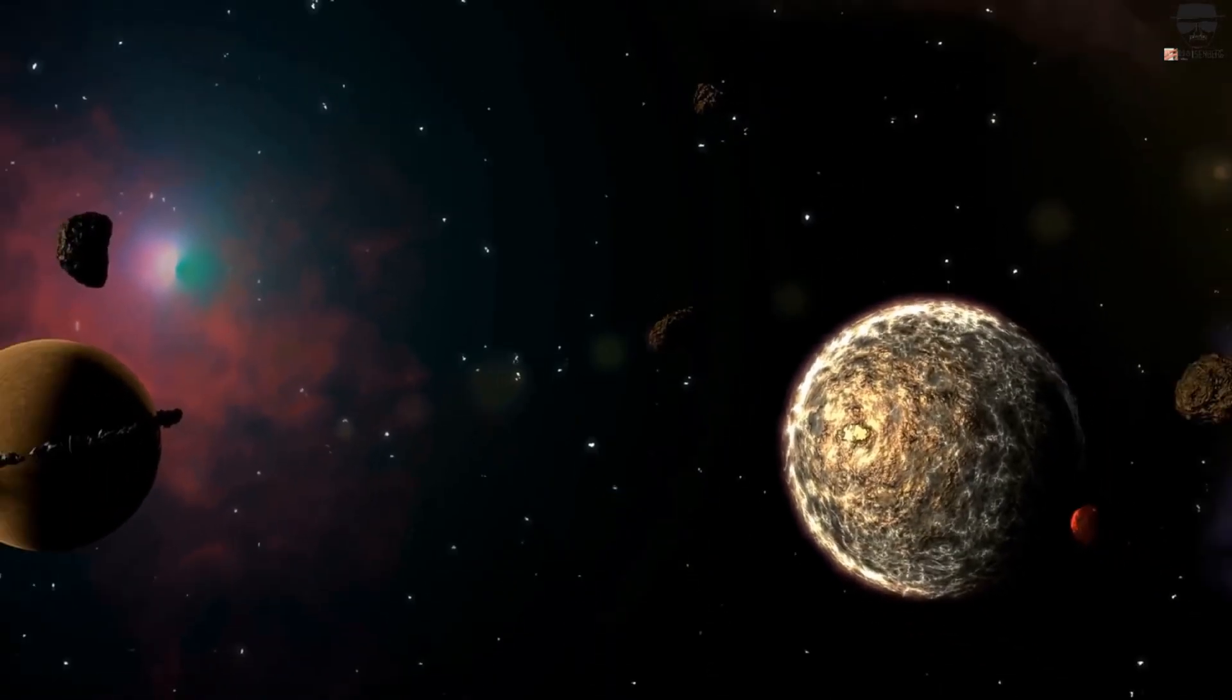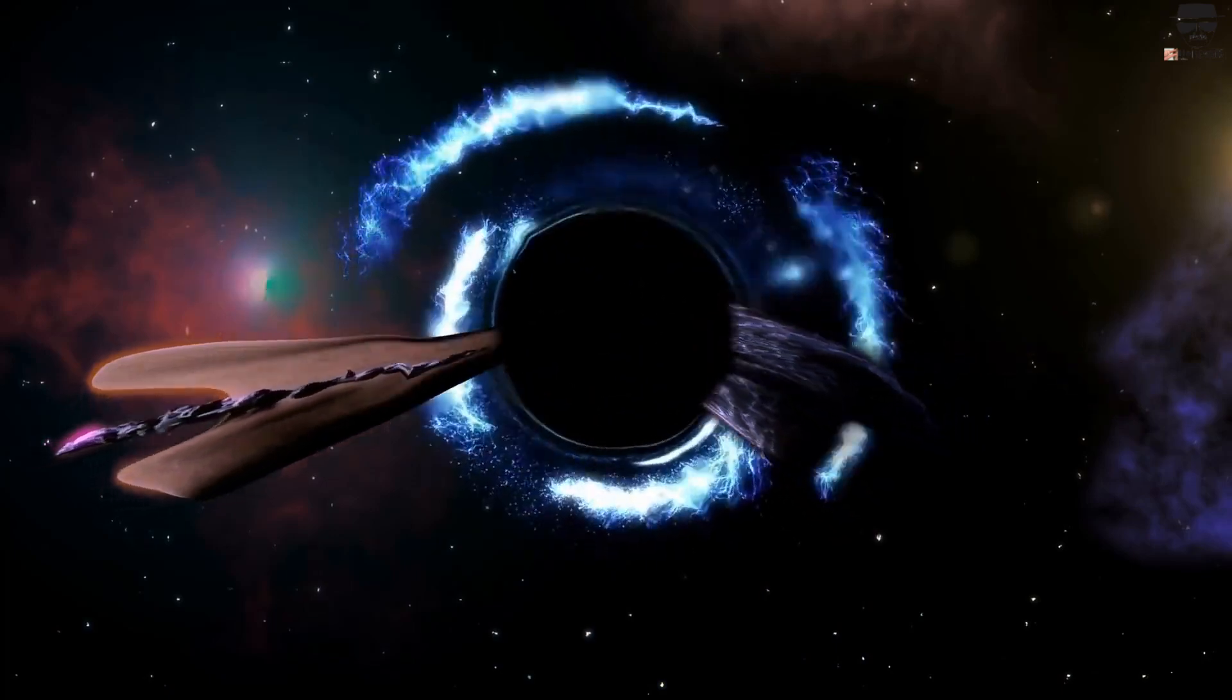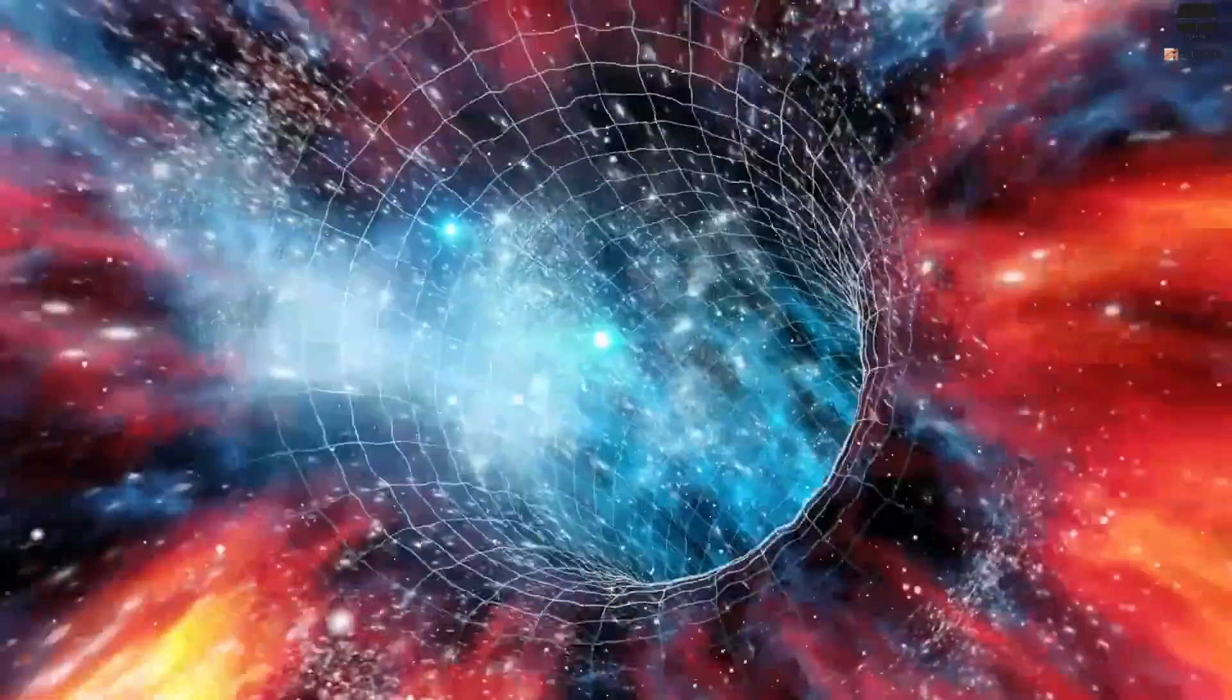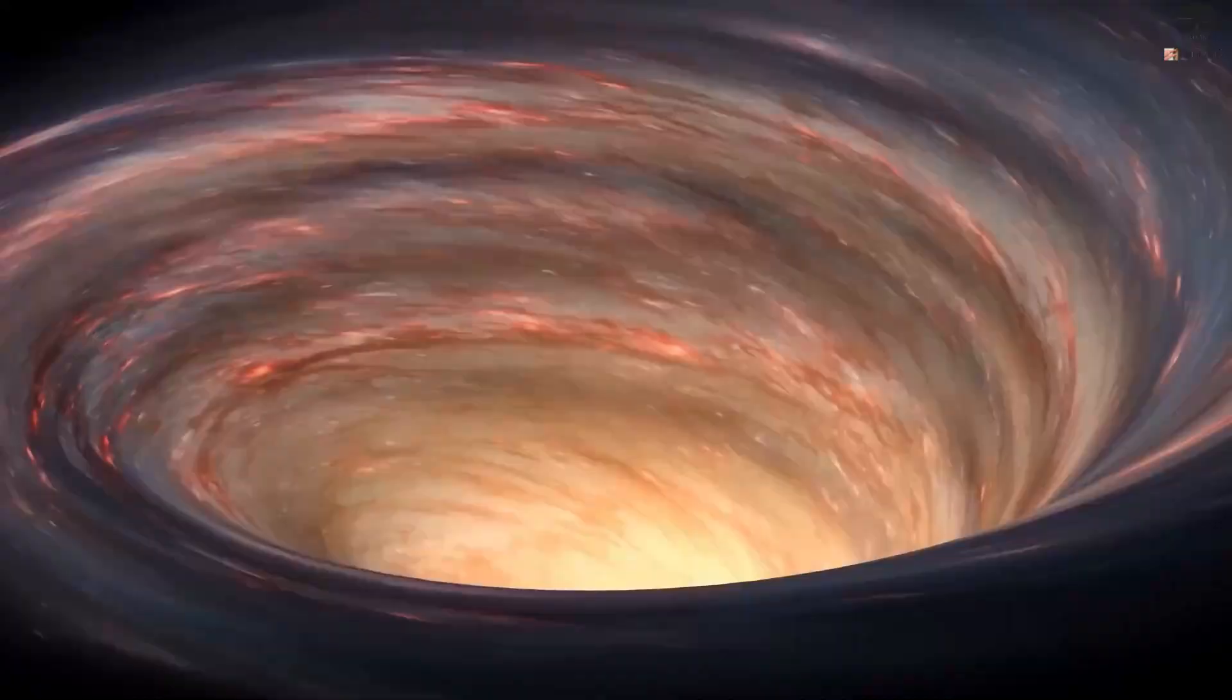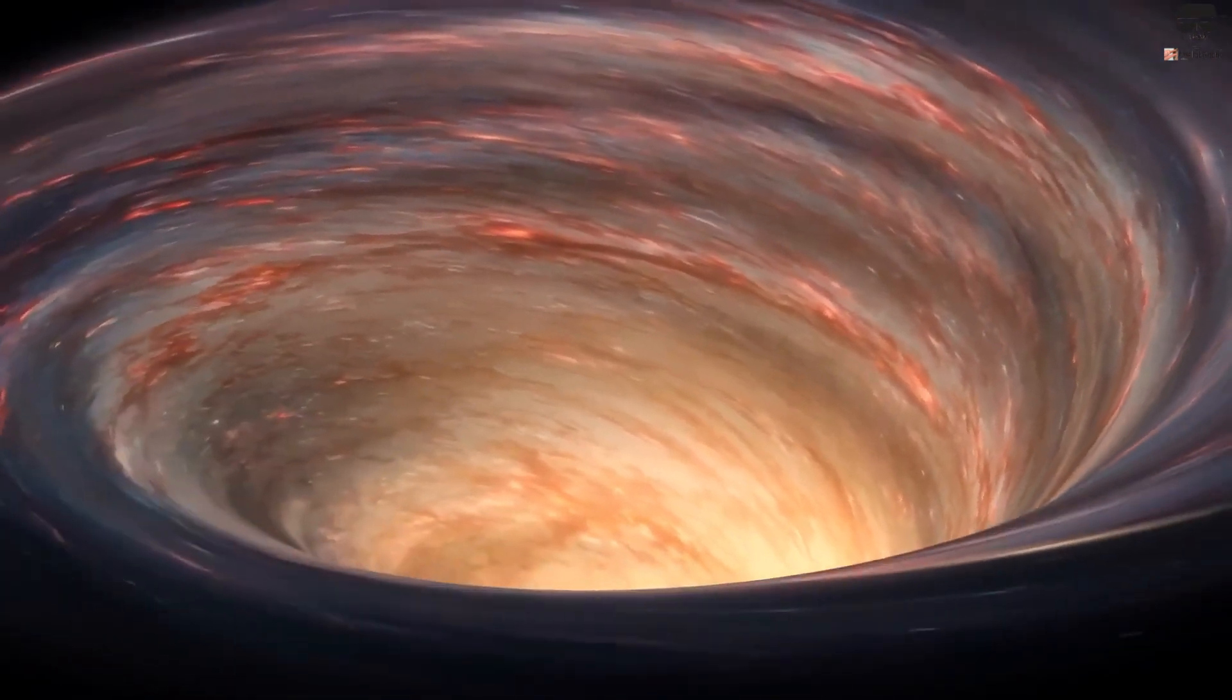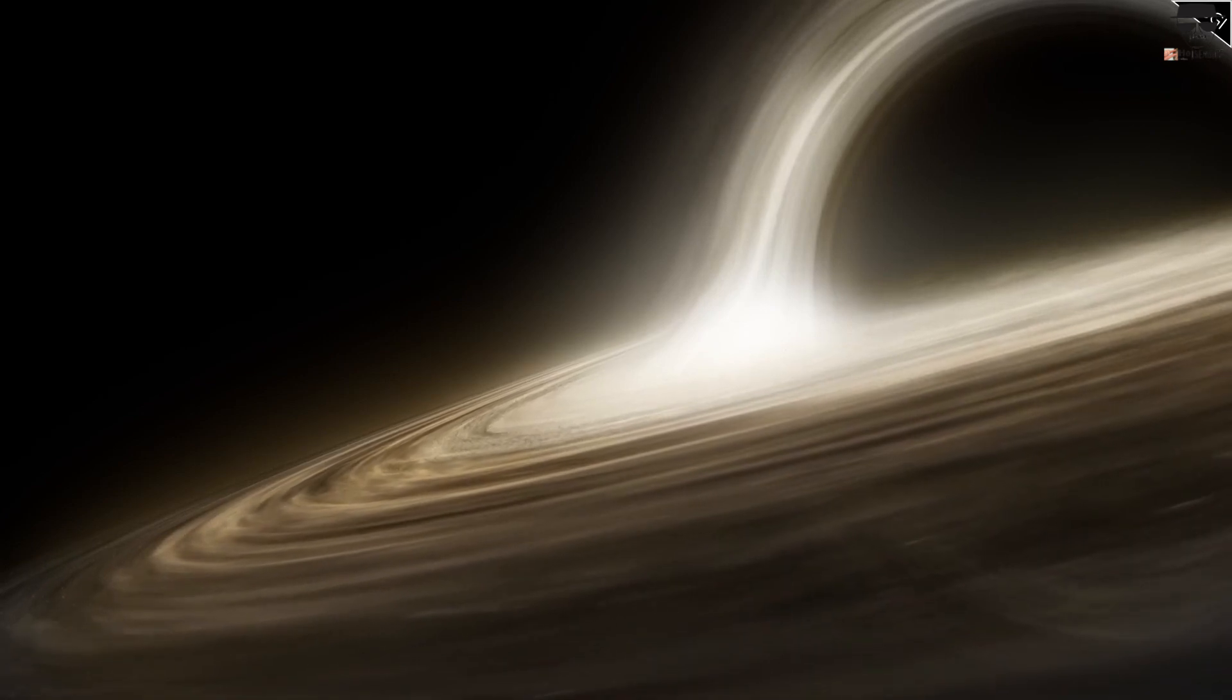Once an object crosses over to the other side of the event horizon, however, it's immediately doomed to be subsumed into the black hole's central singularity. Because the fabric of space-time is severely curved inside a black hole, an infalling object will reach the singularity within seconds of crossing the event horizon, growing the black hole's mass in the process.